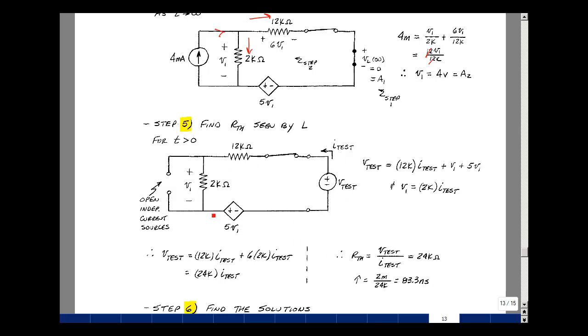Let's go around the loop here. Now this current i-test is going to flow around this loop. So I'm going to get a drop across the 12k. So the rise in voltage is v-test, and I have i-test times 12k. But then I have v1, and I have 5v1. So I have 6v1. So I got v-test in terms of i-test, but also the variable v1.